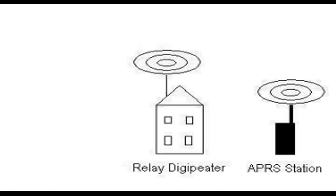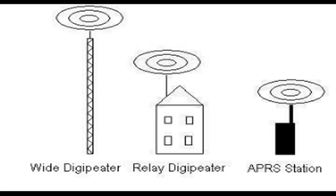Now let's talk about digipeaters and APRS paths. Operating APRS mobile can make it difficult to know how well your signal is really getting out. Sometimes your APRS transmission may have to be routed through other stations to get to its destination — this is where APRS paths come into play. Digipeaters are stations that can re-broadcast APRS data. The first type is a simple relay. Relay stations are not overly powerful, but their job is to forward traffic onto bigger stations, known as wide digipeaters.